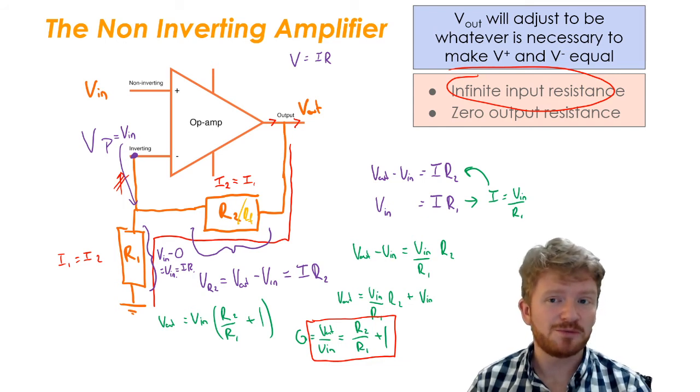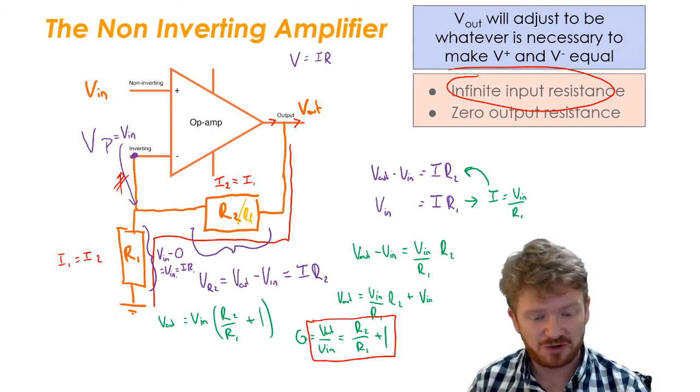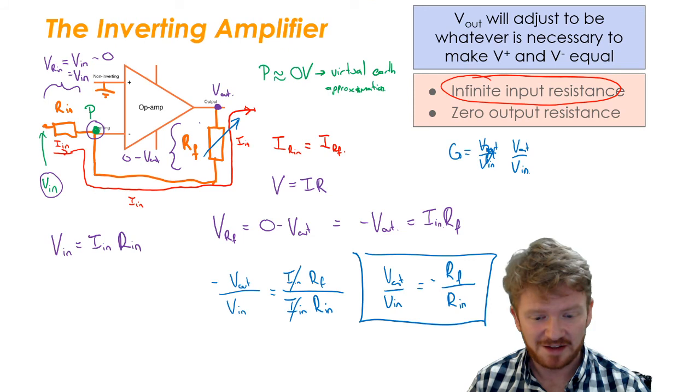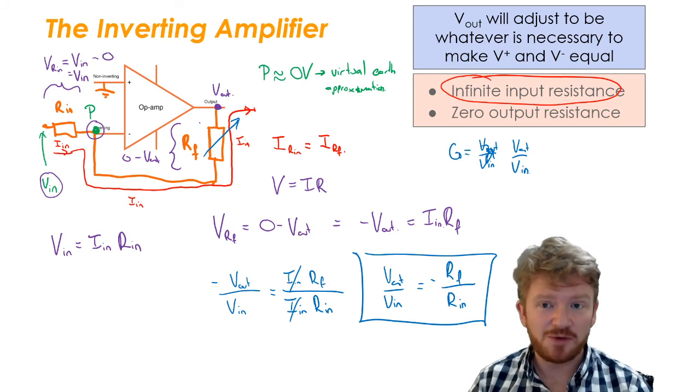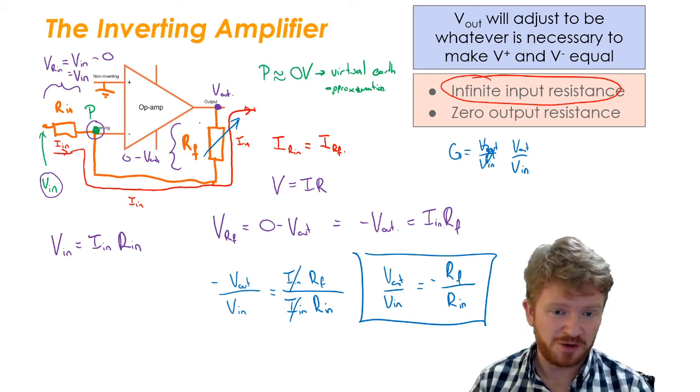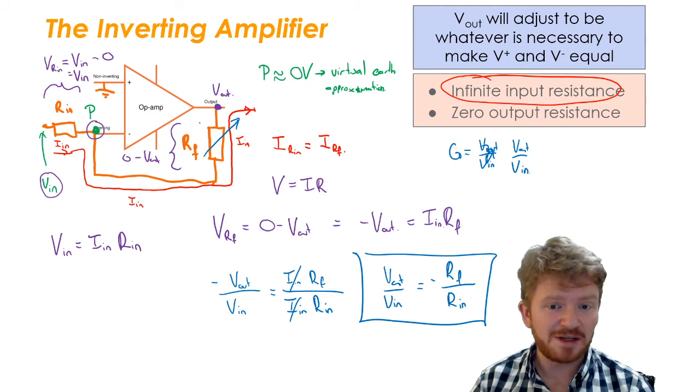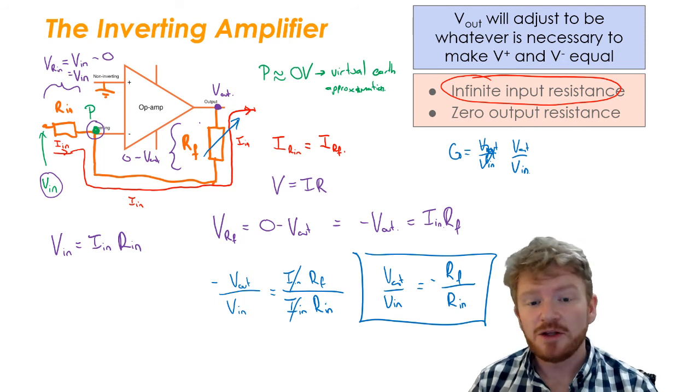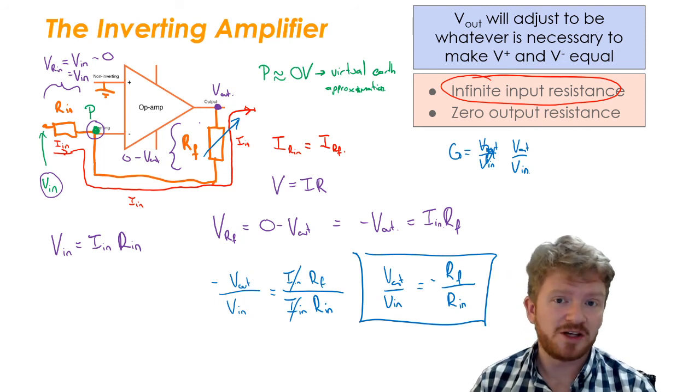And this is quite important, because if you think about the inverting amplifier, the equation for the inverting amplifier is RF over R1. So that means that if you make RF smaller than Rin, you can have less than 1 as your gain. So you can have a below 1 gain.